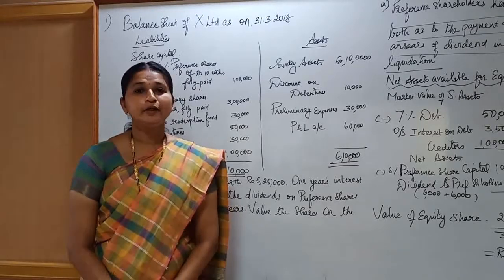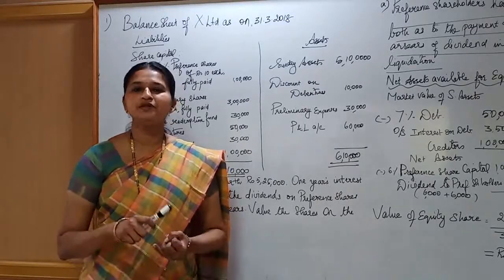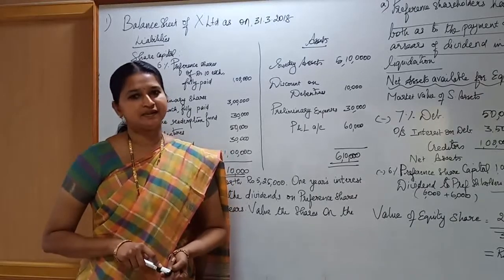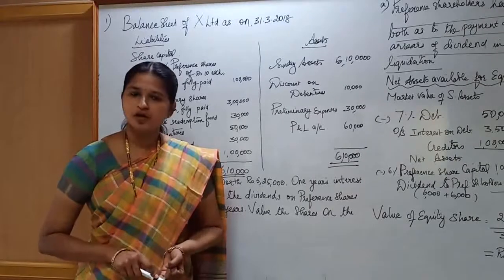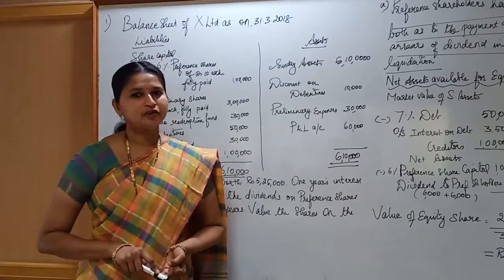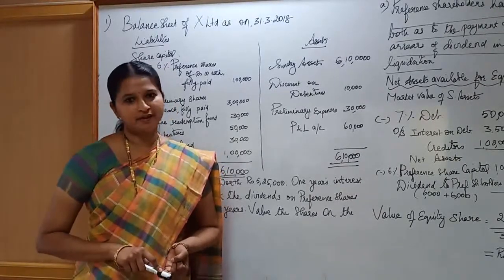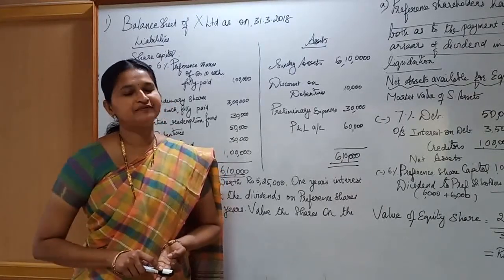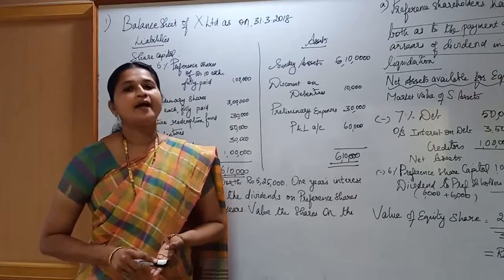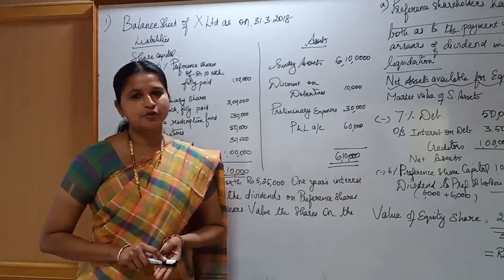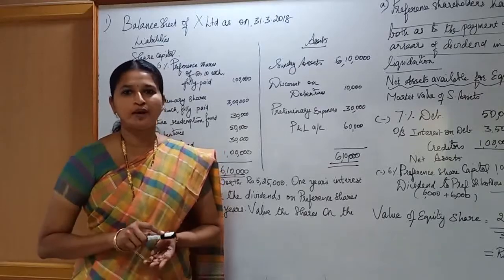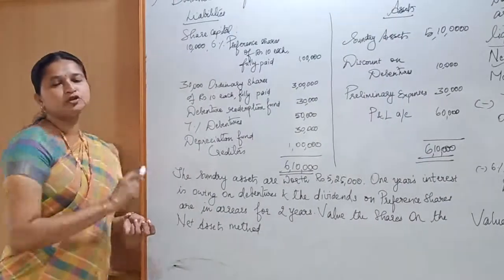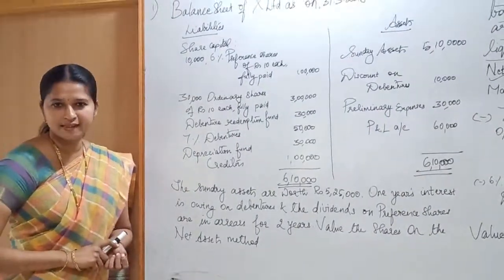In case of the net asset method, equity shares are valued considering whether preference shareholders have no priority as to preference share capital and preference dividend, or priority as to payment of both, or priority as to capital only, or priority as to dividend only. Let us now look at a problem regarding valuation of shares using the net asset method.